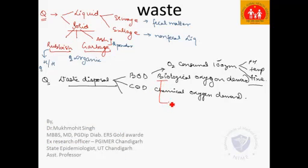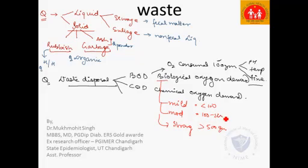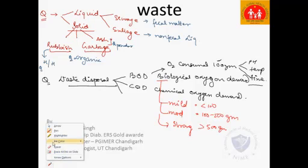The BOD can be classified as mild, moderate, or strong. Strong sewage has a BOD of greater than 500 mg, mild is less than 100, and moderate is 100 to 500. COD, or Chemical Oxygen Demand, is based on the chemical oxygen consumed by a specified gram of sewage.